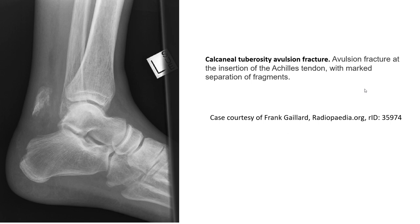This is an example of a calcaneus tuberosity avulsion fracture. The avulsion fracture has the insertion of the Achilles tendon with marked separation of the fragment.